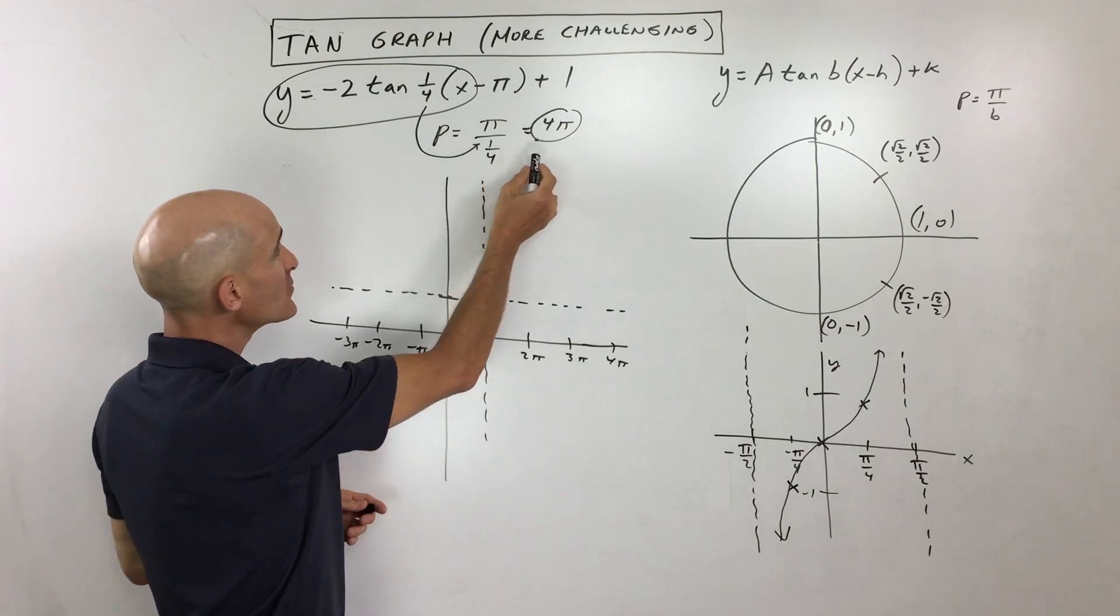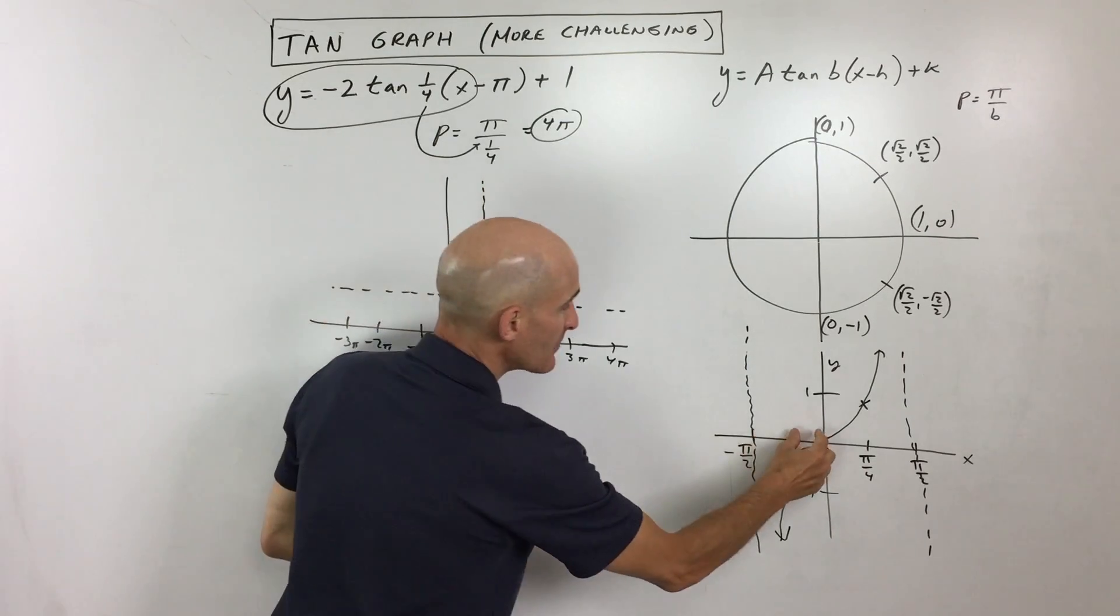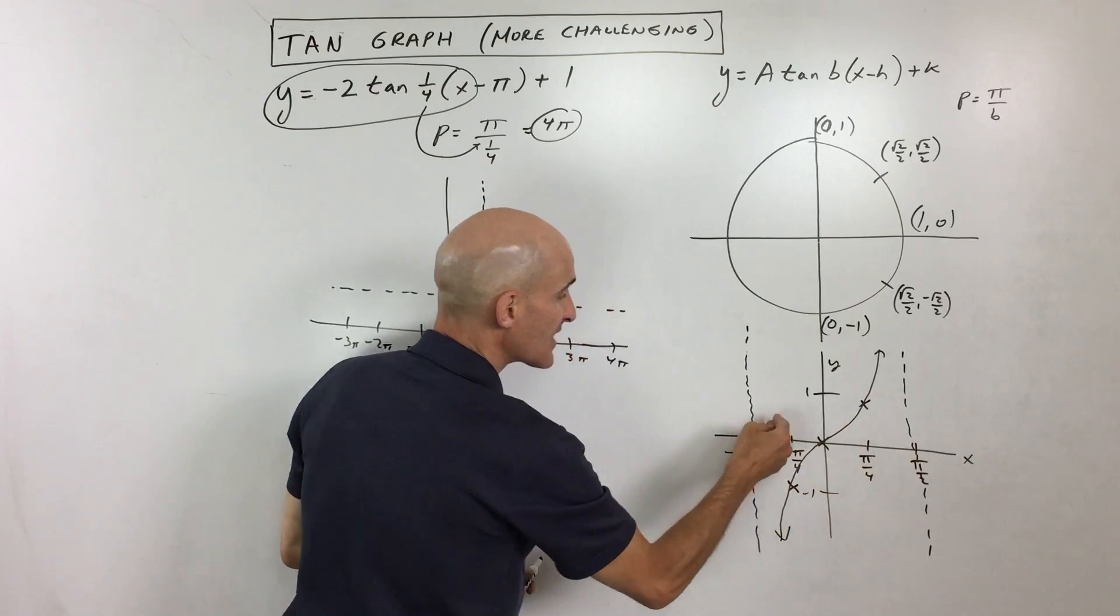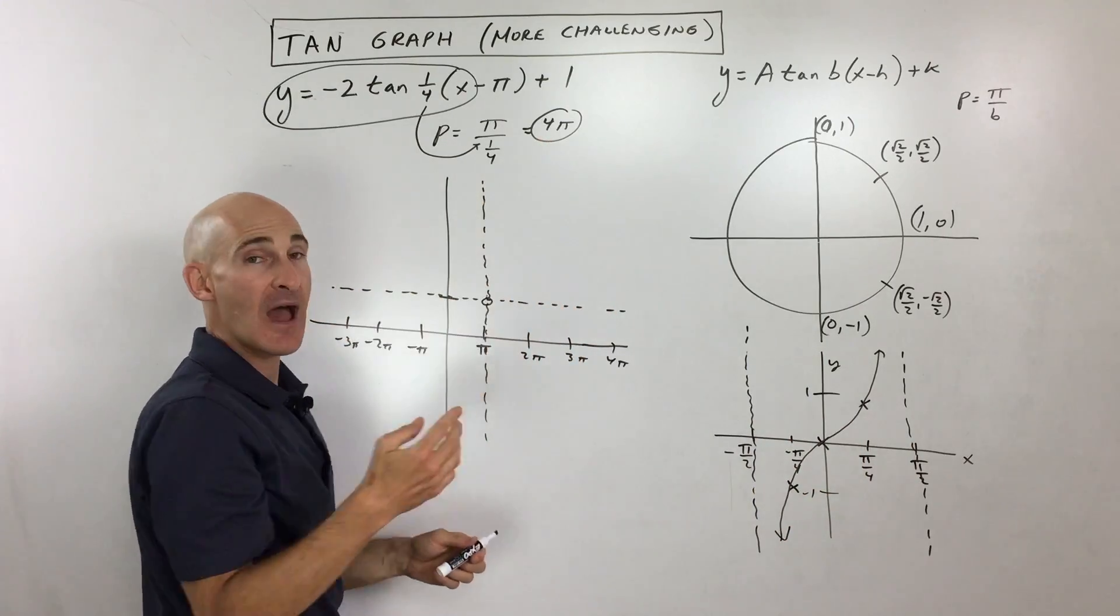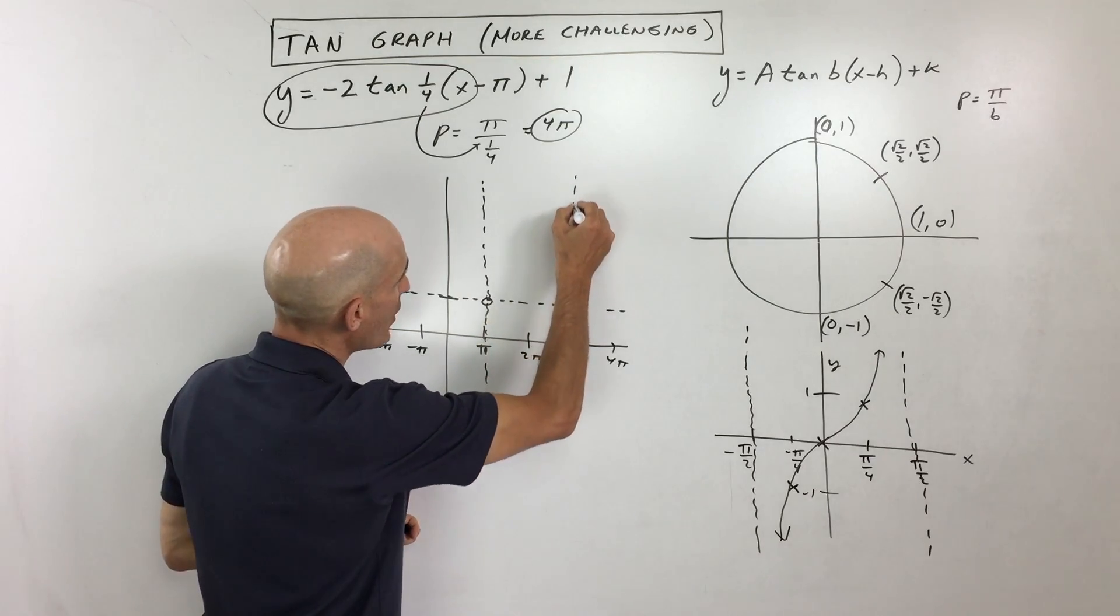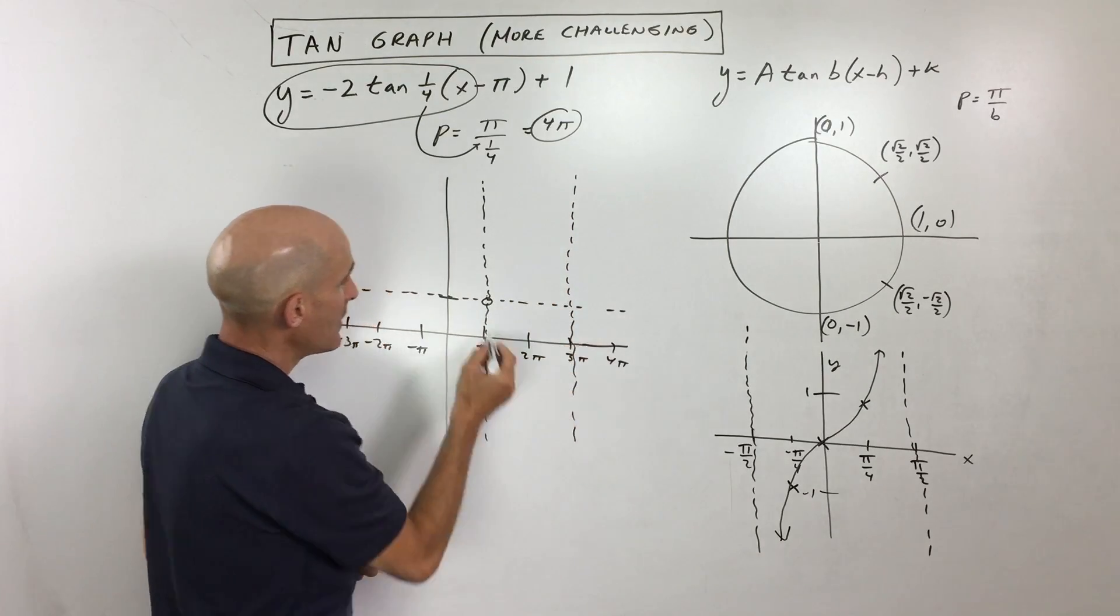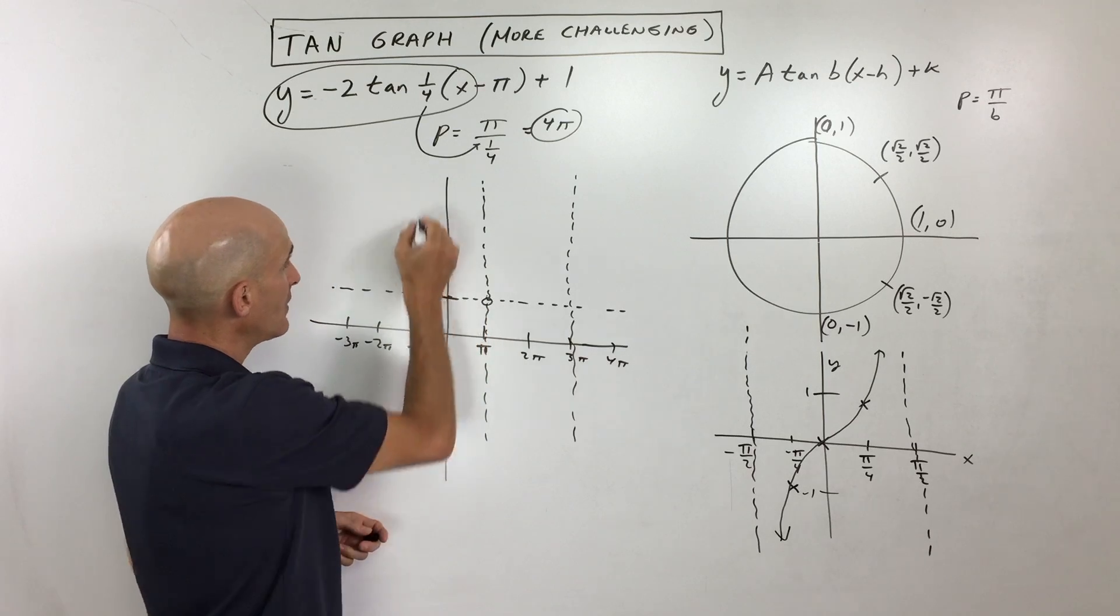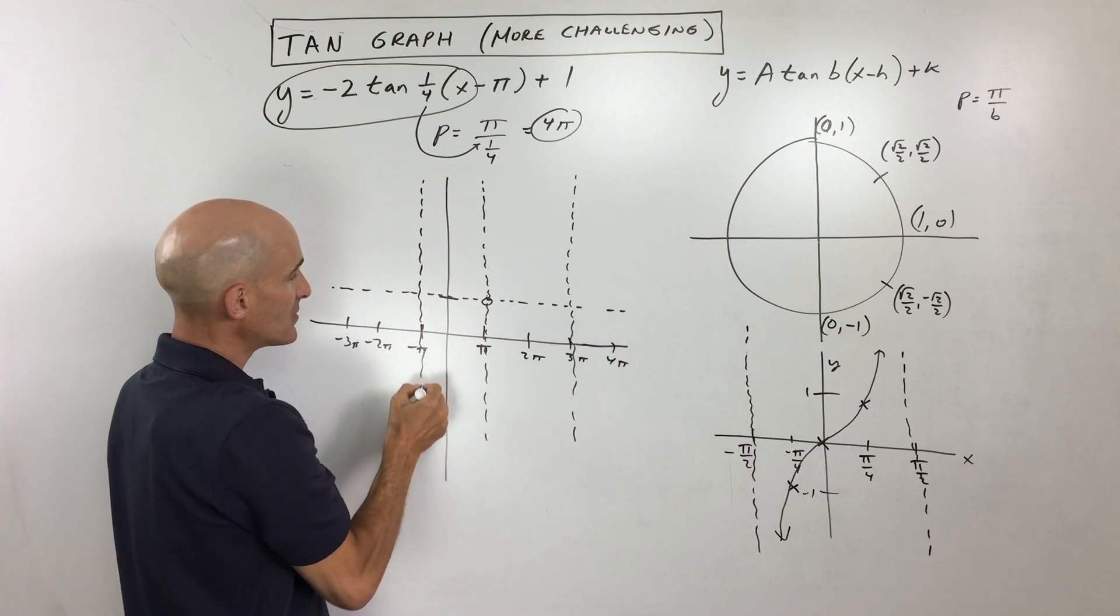So what we're going to do now, because we know the period is 4 pi, and remember how we talked about half the graph is to the right of the y-axis, half is to the left? If you take 4 pi and cut it in half, that's 2 pi. So if I go right 2 pi from here, that's going to be where our vertical asymptote is right there. If we go 2 pi to the left, that's where our other vertical asymptote is.